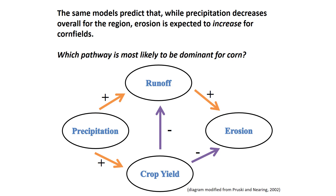The same model predicts that while precipitation decreases overall for the region, erosion is expected to increase for cornfields. The dominant pathway for corn is: a decrease in precipitation leads to a decrease in crop yields, which increases runoff, which increases erosion. In this case, crop yield must be severely impacted so that even though there is less water, there is an increase in erosion. A decrease in crop yield leads to decreased canopy protecting the soil, fewer roots, lower organic matter, less stability, more erosion, and decreased infiltration.